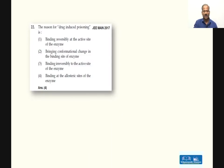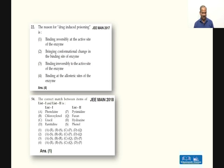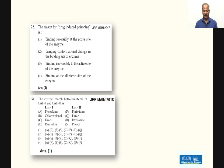JEE Main 2017: the reason for drug-induced poisoning — the drug acts as a poison by binding irreversibly to the active site of the enzyme (check the textbook for details). JEE Main 2018 correct match question: phenylgene, chloroxylenol, uracil, and ranitidine matched to hydrazine, phenol, pyrimidine, and furan-type groups. Phenylgene is a hydrazine derivative with NH-NH2; chloroxylenol is a phenolic derivative of meta-xylene; uracil is a pyrimidine-type base; ranitidine contains a furan ring.